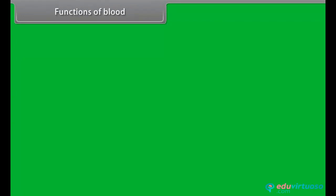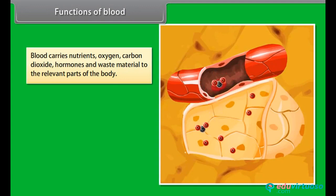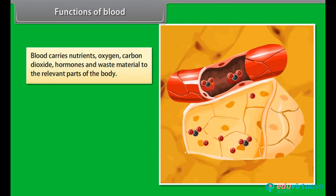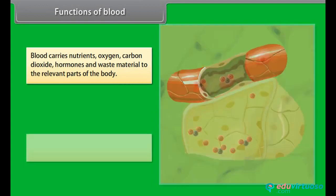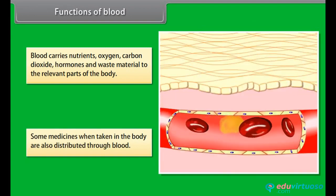The functions of blood include carrying nutrients, oxygen, carbon dioxide, hormones and waste material to the relevant parts of the body. Some medicines, when taken into the body, are also distributed through blood.